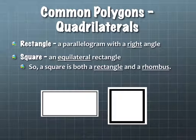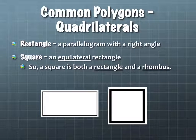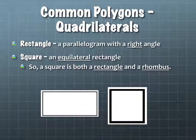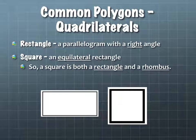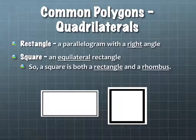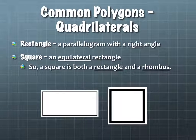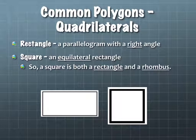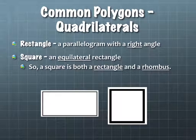Rectangles and squares: a rectangle is a parallelogram with a right angle. A square is an equilateral rectangle. So a square is both a rectangle and a rhombus.